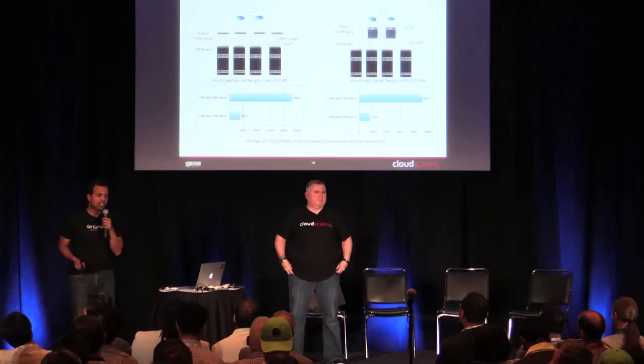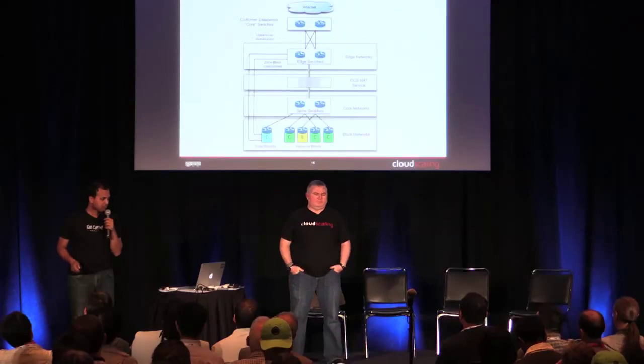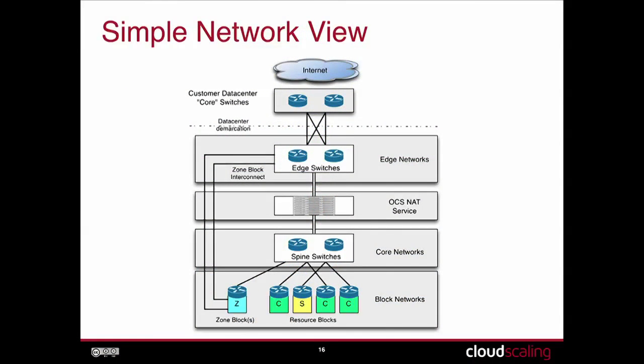Let's look at the physical topology. At the top we have the data center switches, which come down to an edge network forming the edge of the customer cloud. There is an optional NAT service that sits between the edge network and the core network. Then we have the core network which forms the spine network, which comes down to the leaves — the zone racks or resource racks — which actually host the zone nodes, compute nodes, storage nodes, and all other nodes.